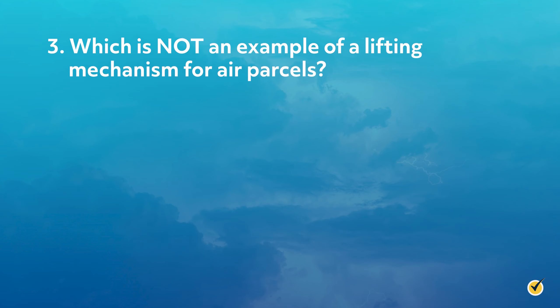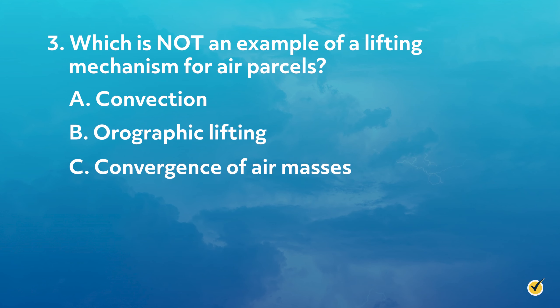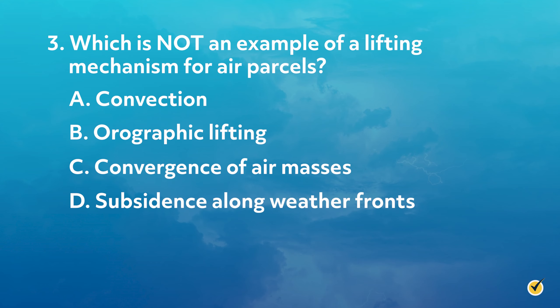Number three: which is not an example of a lifting mechanism for air parcels? A. Convection. B. Orographic lifting. C. Convergence of air masses. Or D. Subsidence along weather fronts. The correct answer is D — subsidence means sinking air, and you can't get clouds when air sinks. That's all for this review. Thanks for watching and happy studying.